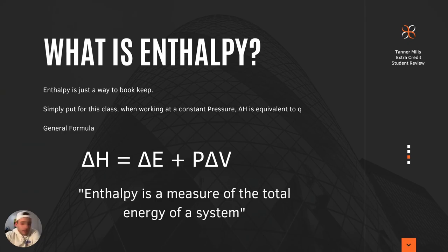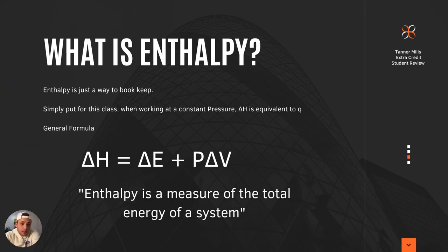The general formula we use — which you can find on your formula sheet — is delta H, your change in enthalpy, which is your final minus your initial, and it's equal to your change in energy plus your pressure times your change in volume. If you substitute in subsequent equations from the sheet, you can clearly solve that if your pressure is constant, then delta H is equal to your heat. So enthalpy is a measure of the total energy of a system.